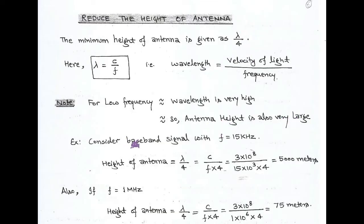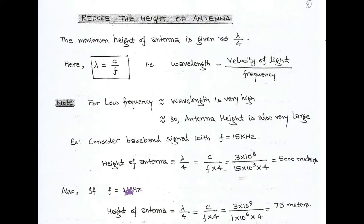For example, consider a baseband signal of frequency 15 kilohertz. The minimum antenna height is λ/4, and converting λ in terms of c and f, we get a height of 5000 meters — very large. But after modulation, the low frequency signal of 15 kilohertz gets converted into 1 megahertz, and in this case the height of antenna is only 75 meters. So modulation greatly reduces the required antenna height.